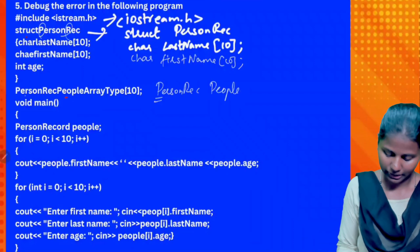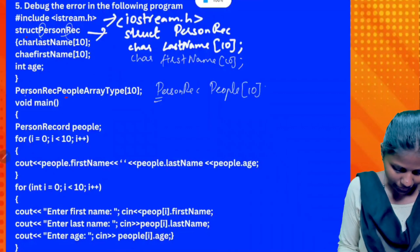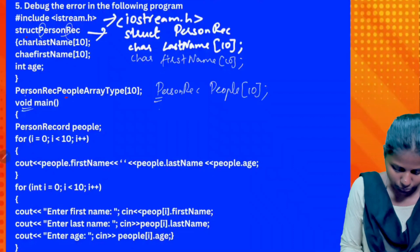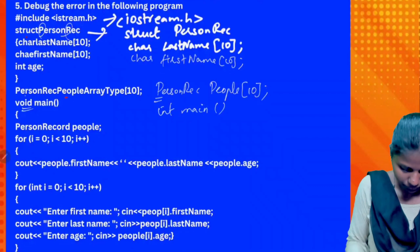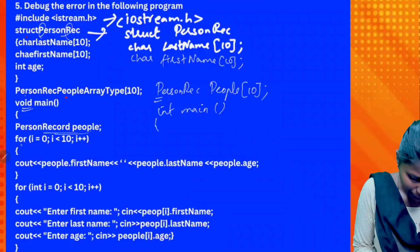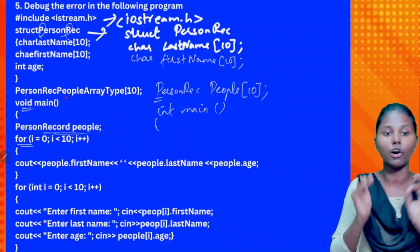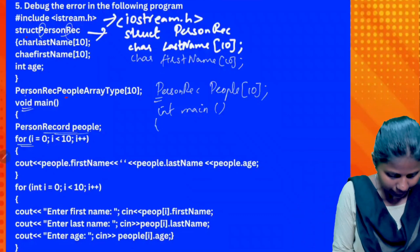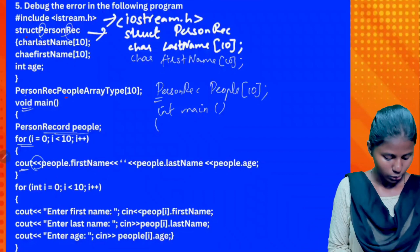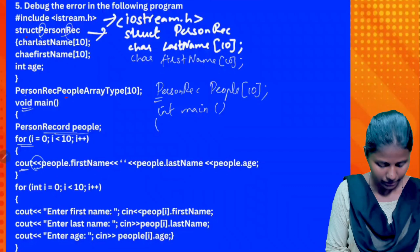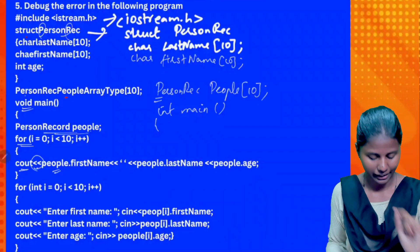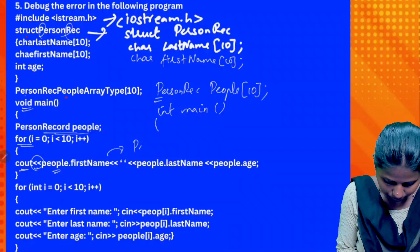Person — how to check the person: P capsule, R capsule, then people — that is one array type mention. This bracket port is one array type. Next, int main. Next, this statement — no problem. This is a for loop — for loop syntax is correct. Then check the cout.